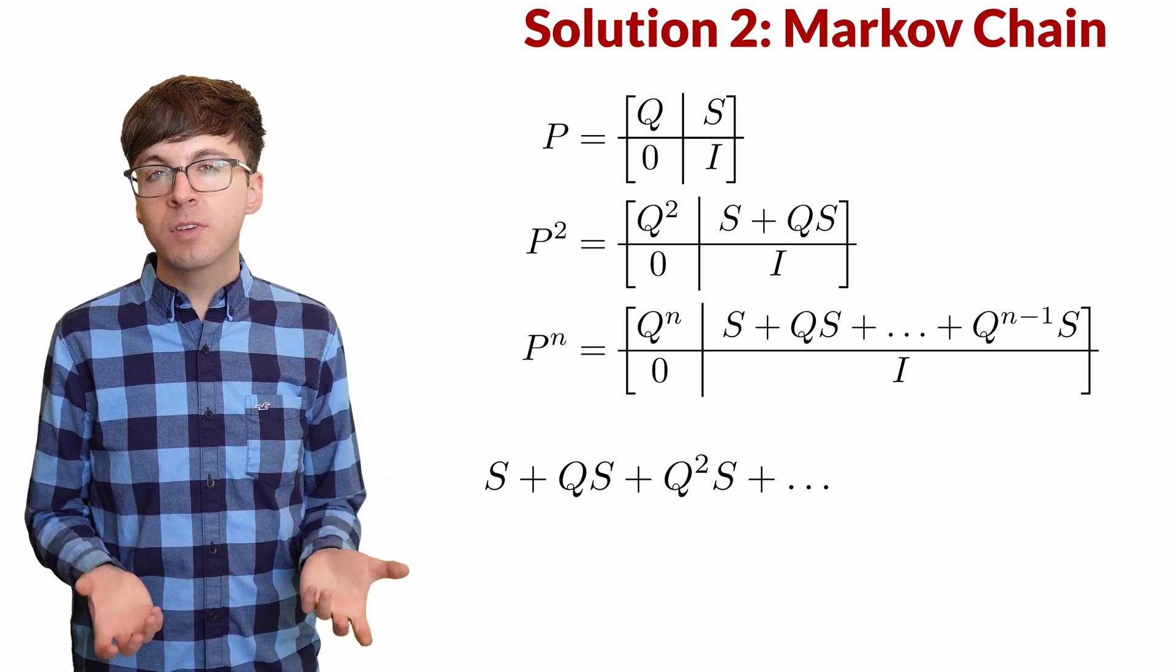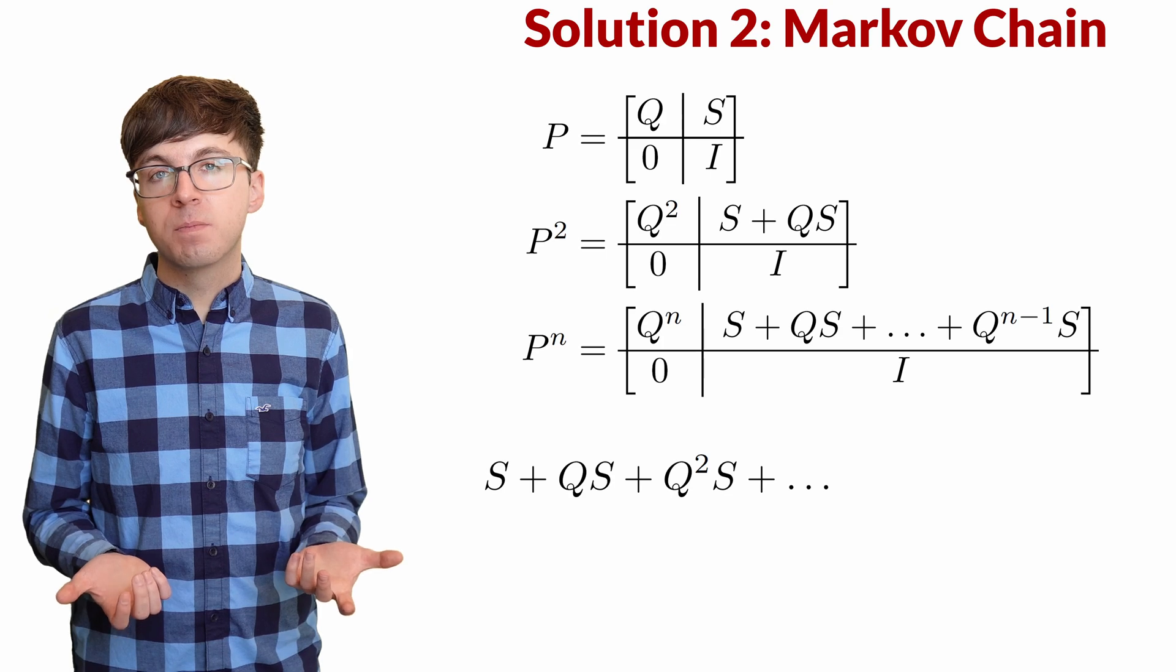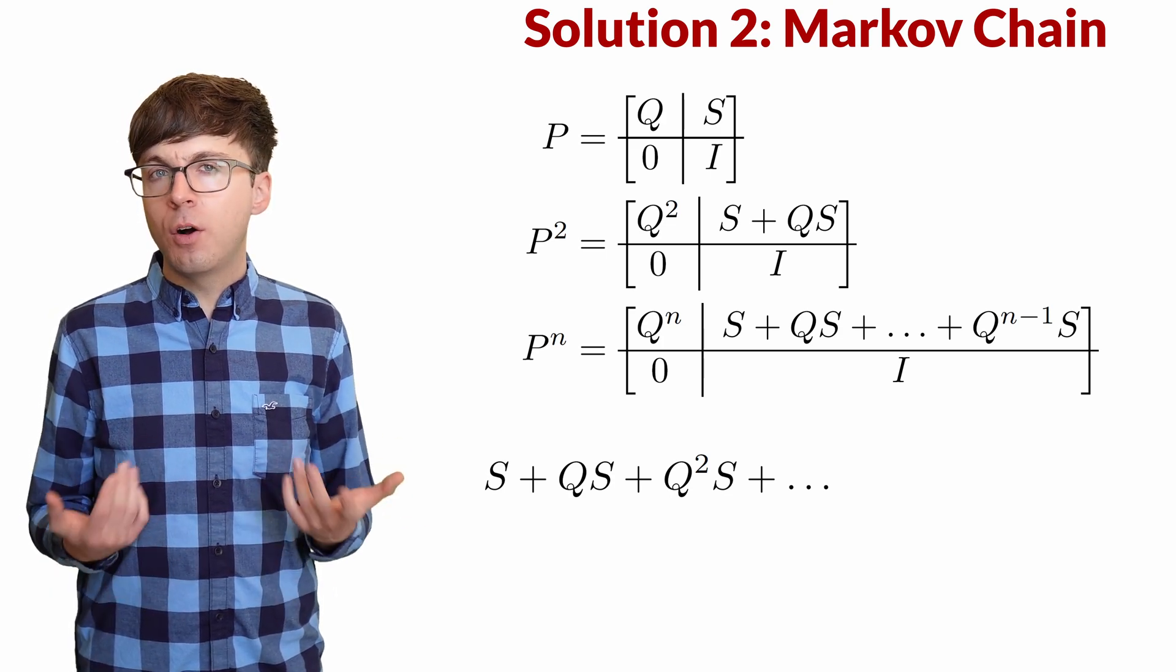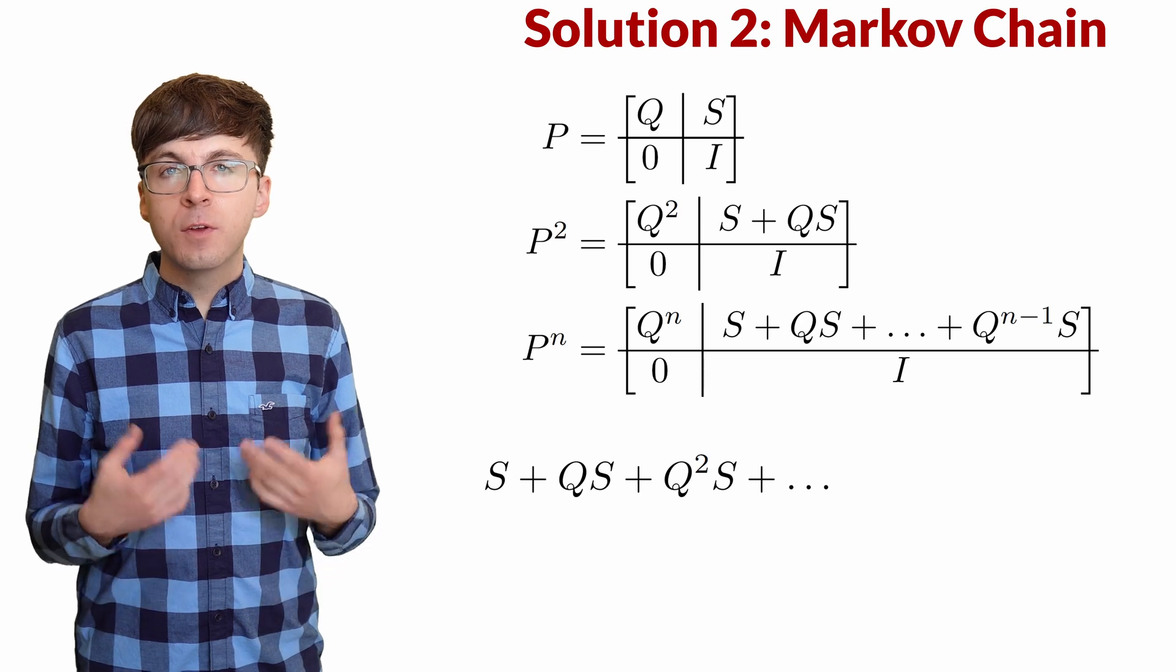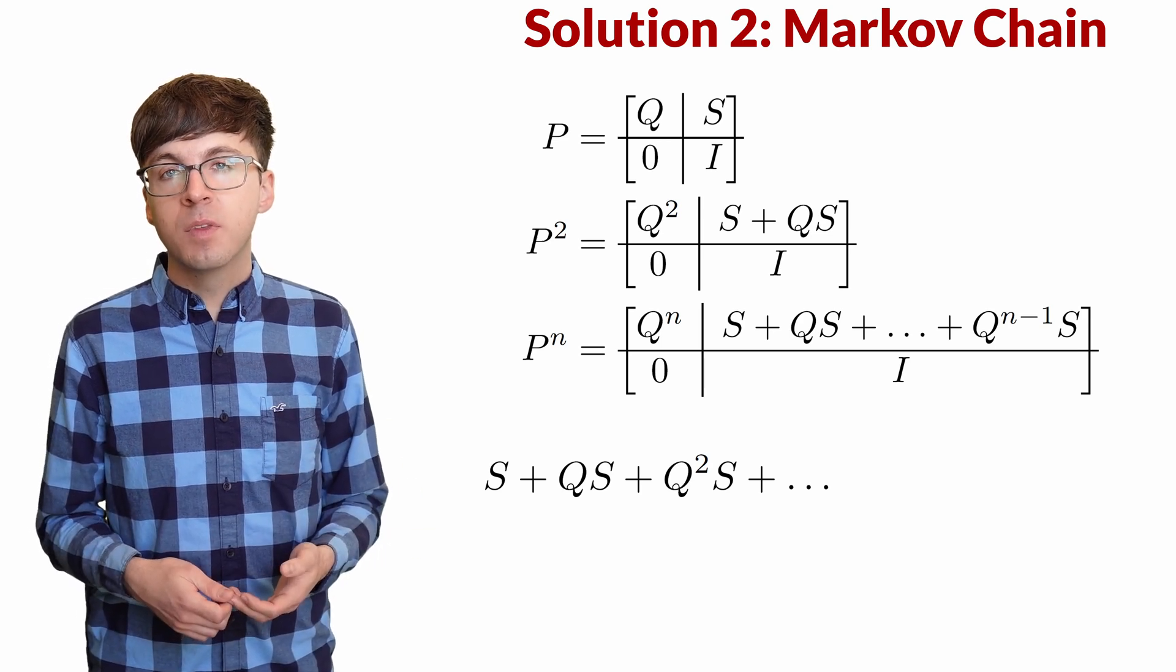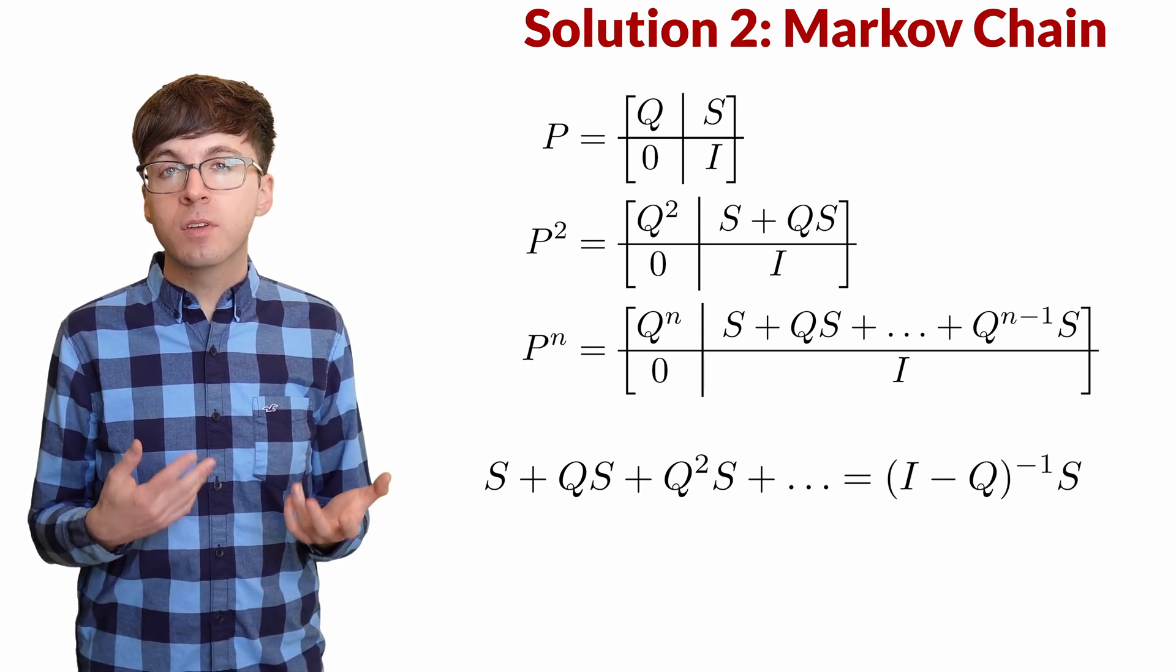Since Q is a substochastic matrix, all the rows add up to 1 or less, there's a nice formula for this sum, which is I minus Q inverse times S. We're skipping a few technical points, but this formula is very similar to the regular geometric series formula.